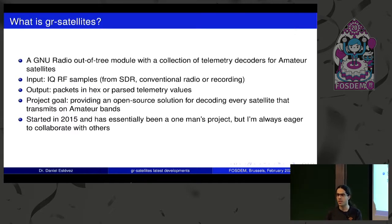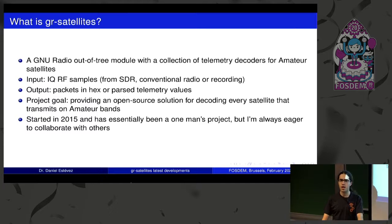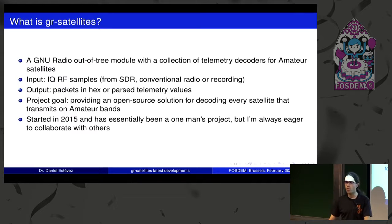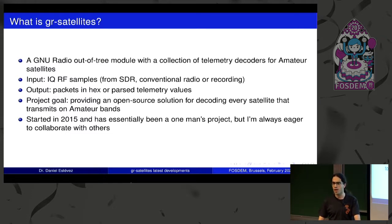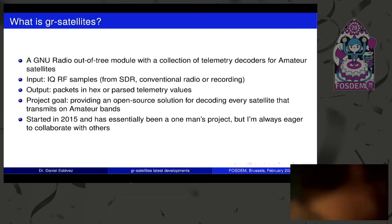The output you get from the decoder is either packets printed out in hexadecimal format, or you can save the packets to a file on your computer, or parsed telemetry values — things like voltages of batteries and buses, current intensities, temperatures, and maybe even payload data. Some satellites have experiments, maybe a high energy particle detector, for example.